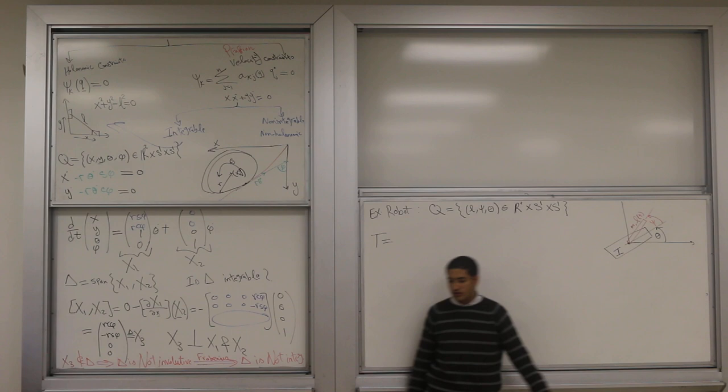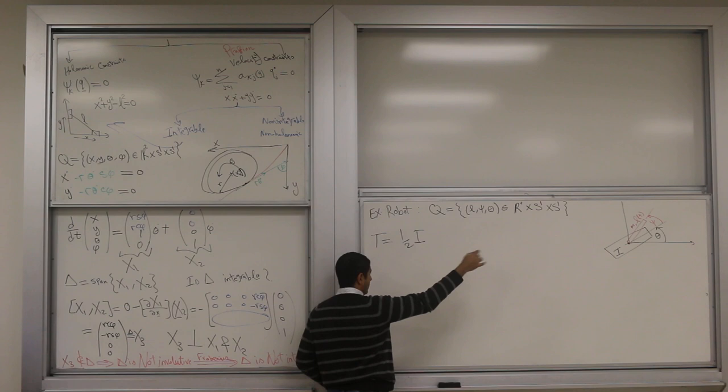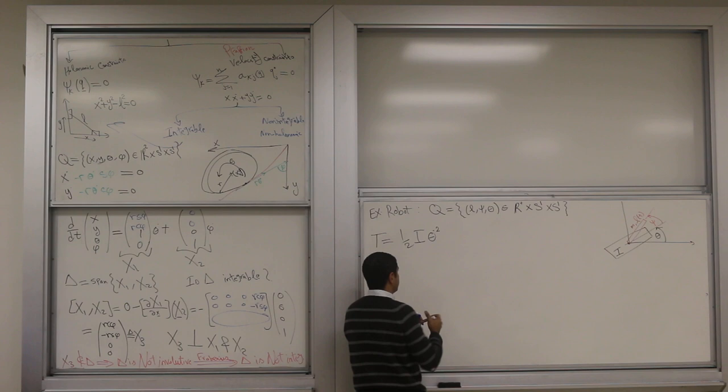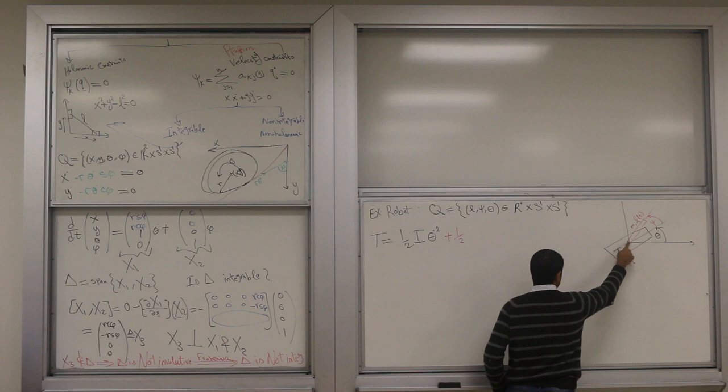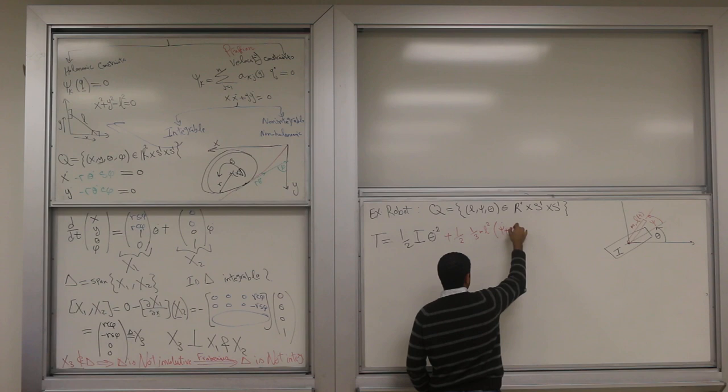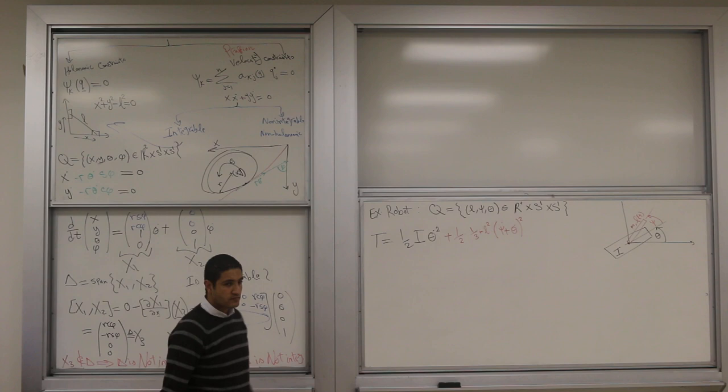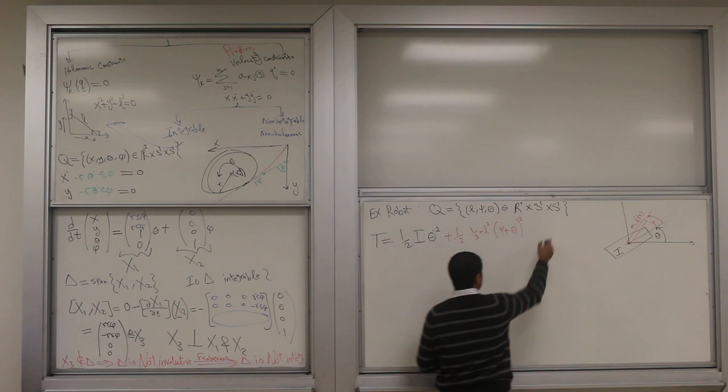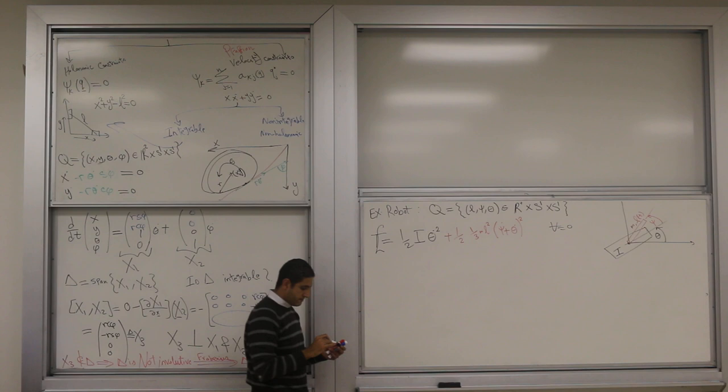What's your kinetic energy? Only rotations for rigid bodies. One half I omega squared for the first body, the black body is I theta dot squared. Plus one half times one-third m L squared times its angular velocity squared, which is theta dot plus epsilon dot squared. Potential energy V is zero, so this is our Lagrangian.